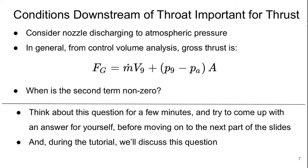Welcome to Part 2 of Lecture 17 of Aerospace Propulsion. We left off with this question of under what conditions is the second term, really involving a pressure difference, non-zero for our thrust equation when we have a convergent nozzle.